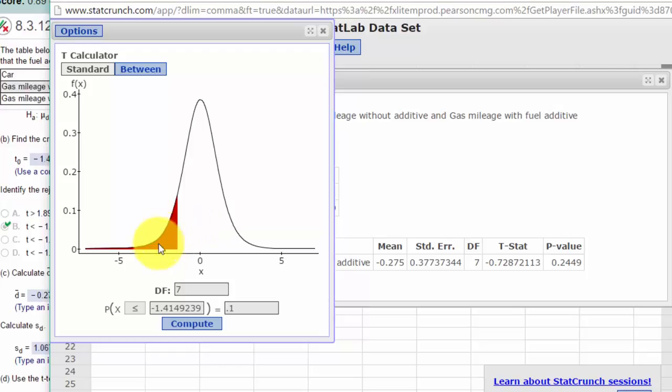And that again is supported by the p-value being much greater than the alpha value. Okay, final piece of information we need.